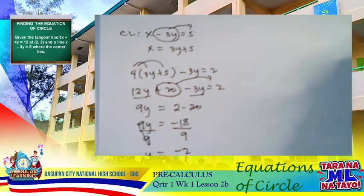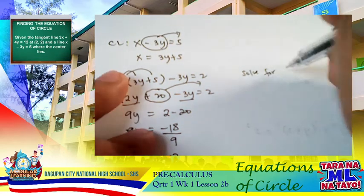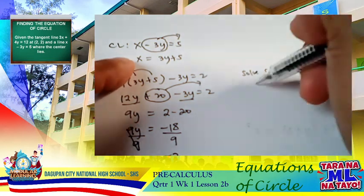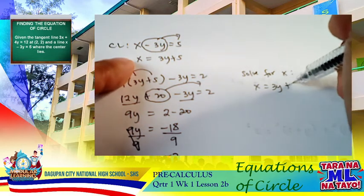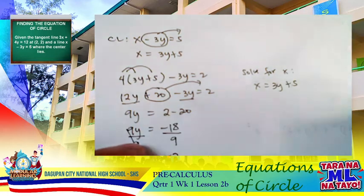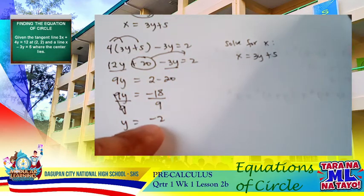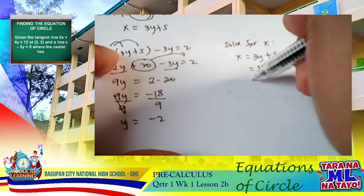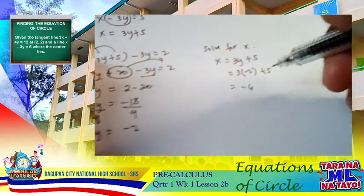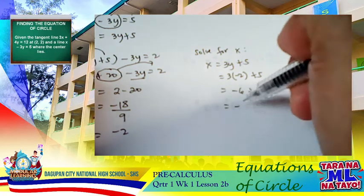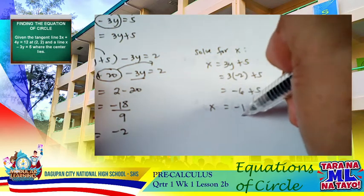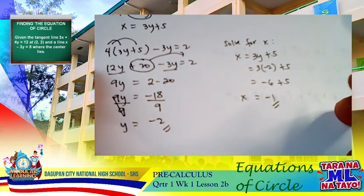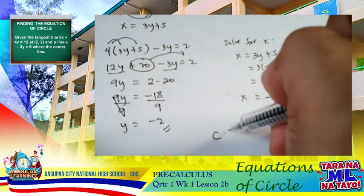Now we solve for x using the center line equation x equals 3y plus 5. Substituting y equals negative 2: x equals 3 times negative 2 plus 5 equals negative 6 plus 5 equals negative 1. So our value of x is negative 1 and y is negative 2. The intersection gives us the center of the circle at (negative 1, negative 2).